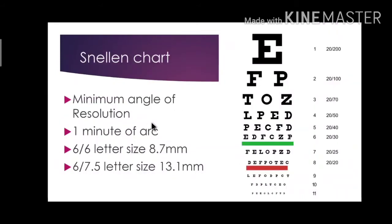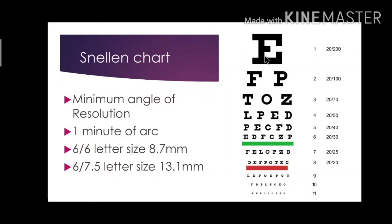In the previous video we discussed the minimum angle of resolution. The minimum angle of resolution of the eye is 1 minute of arc. We discussed how that is used to find the gap width of a letter, and using that we also found the size of the 6/6 letter, which is 8.7 mm. Using the same method we can find the size of the 6/7.5 line, which is 13.1 mm. The same way, the size of all other letters in the chart can be calculated and the chart is constructed.